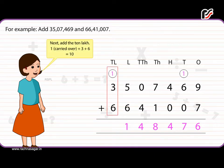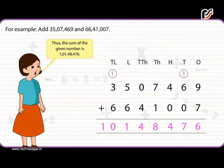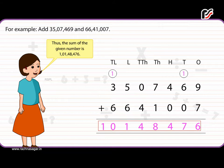Next, add the 10 lakhs: 1 carried over plus 3 plus 6 is equal to 10. Write 0 under the 10 lakhs column and 1 in the next column. Thus, the sum of the given numbers is 1 crore, 1 lakh, 48,476.